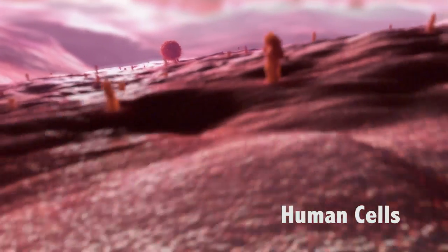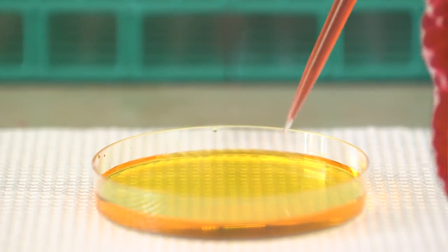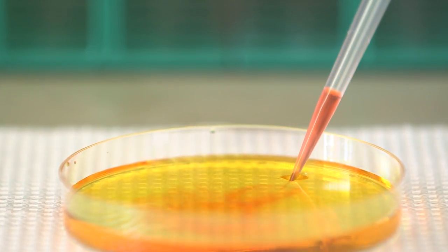How do scientists make this kind of vaccine? By forcing the virus to grow in different kinds of cells in the lab.